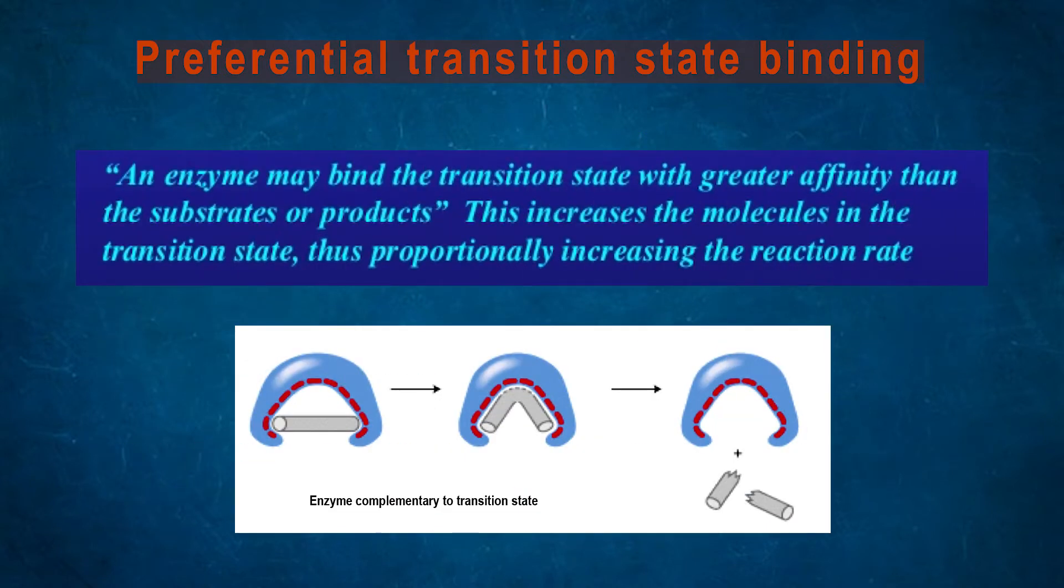An enzyme may bind the transition state with greater affinity than the substrate or products. This increases the molecules in the transition state, thus proportionally increasing the reaction rate.